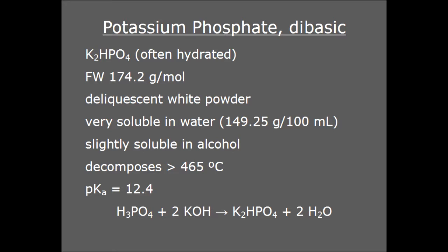Dibasic potassium phosphate, also known as dipotassium phosphate, potassium hydrogen phosphate, and several other names, is a salt made by the neutralization of phosphoric acid with potassium hydroxide.